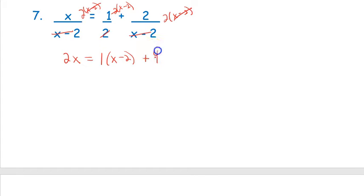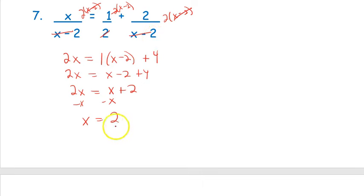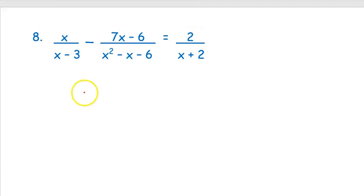The (x − 2)'s cancel and 2 times 2 is 4. I go to solving: 2x = (x − 2) + 4. Combining like terms gives x + 2. Subtracting x gives x = 2. Now I check: if I plug 2 into the denominator of the original problem, I get 2 − 2 = 0. You cannot have zero on the bottom of a fraction, so this is not actually the answer. The answer is no solution. This is called an extraneous solution — one that the algebra produces but doesn't work in the real world.